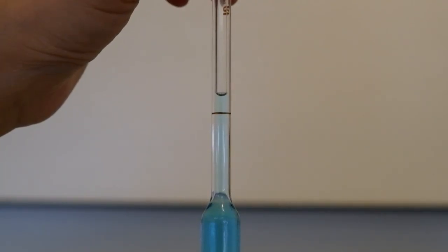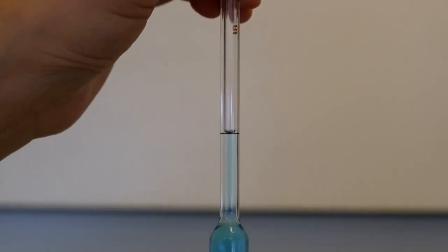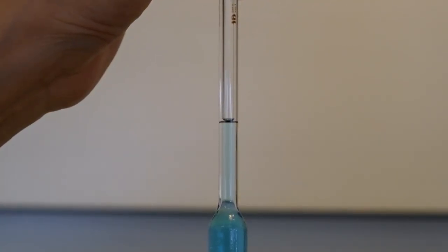Slowly release pressure on the index finger so that the bottom of the meniscus approaches the calibration mark at eye level. At the mark, apply pressure on the index finger to stop the level of the solution such that the bottom of the meniscus is sitting on the calibration mark.